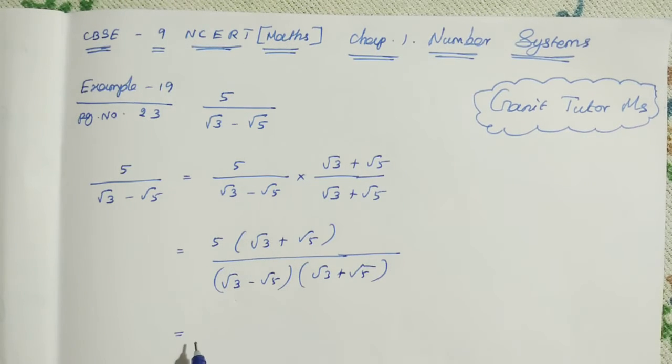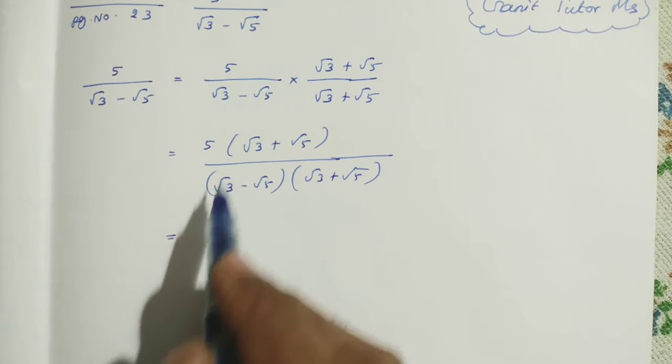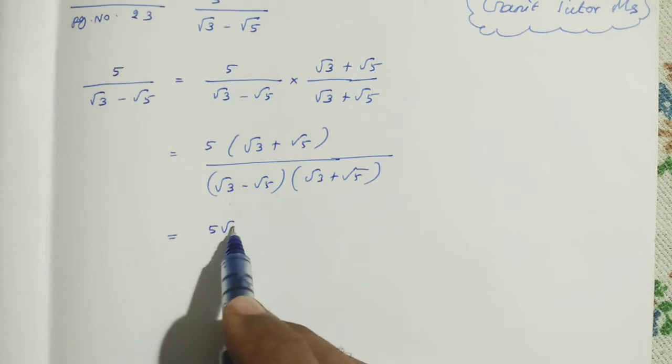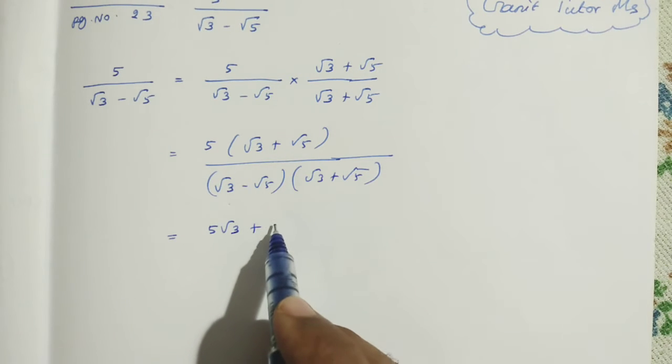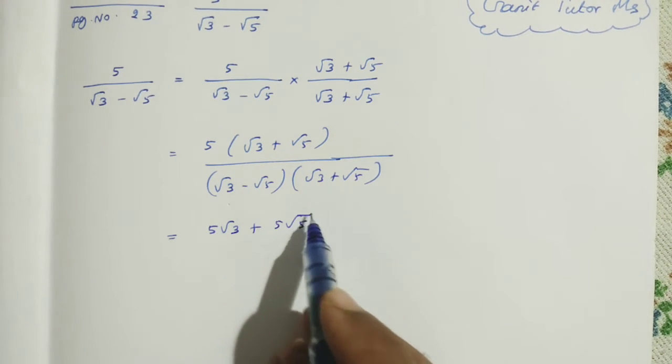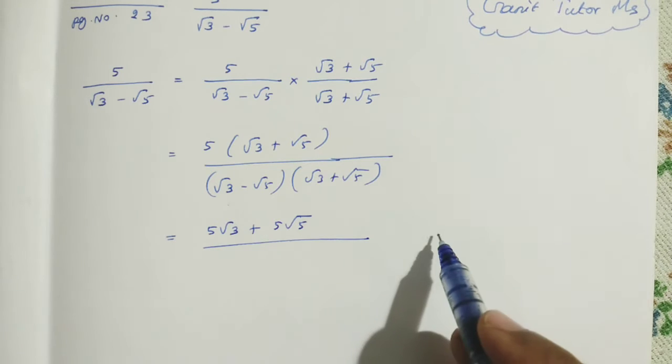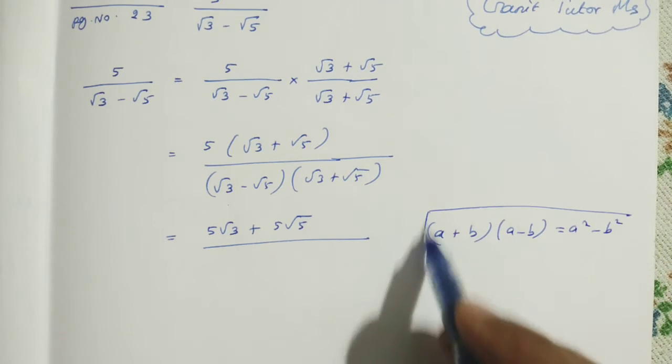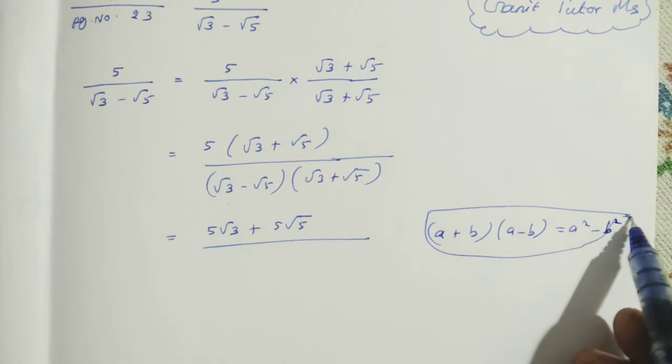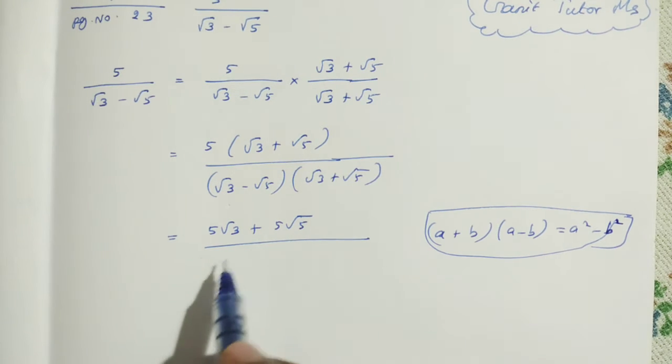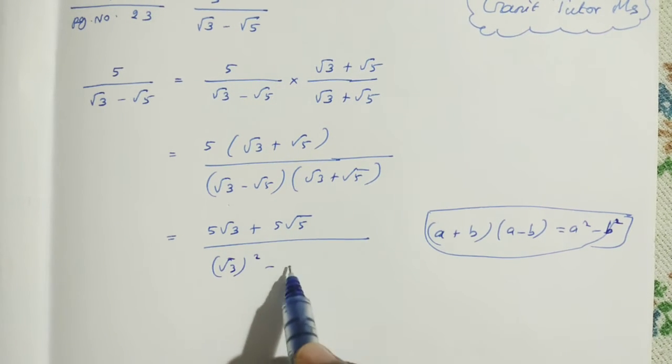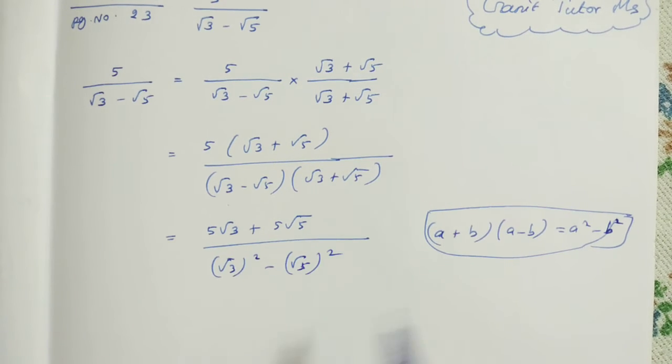Next, use the distributive property to multiply: 5 root 3 plus 5 root 5 divided by... Now we can use the identity a plus b times a minus b equals a squared minus b squared. So now, root 3 whole squared minus root 5 whole squared.